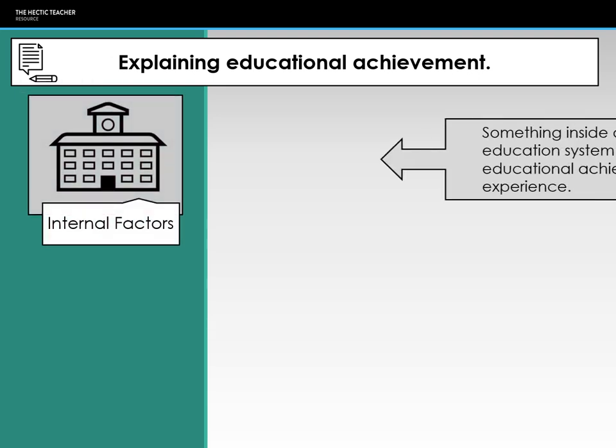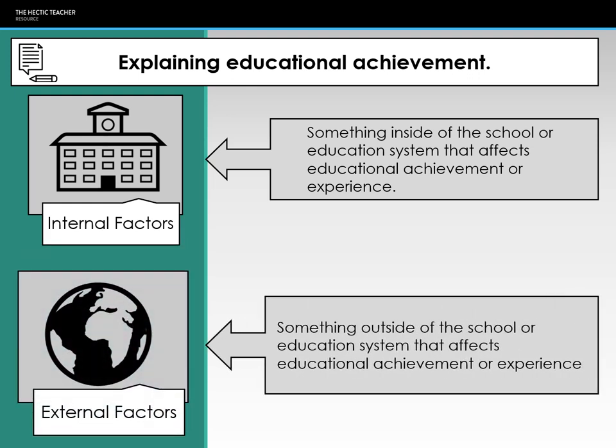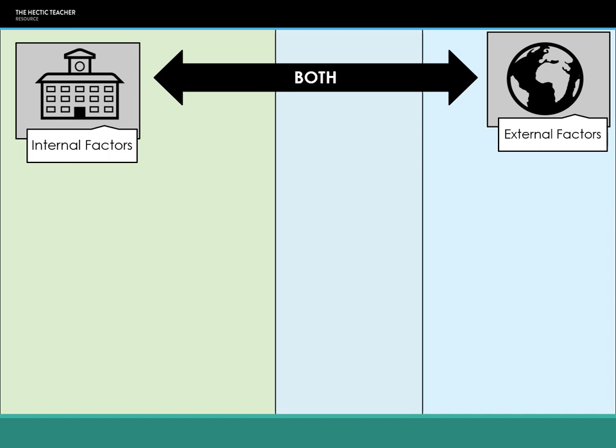When explaining educational achievement, we need to look at internal factors — what's happening within school and the education system, including policy — and external factors such as home life and culture outside of school. We need to compare which have more influence. Some factors can be both internal and external, making analysis a little more complicated.